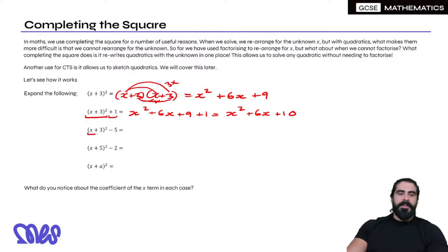Next one, same thing. We know what that expands to: x² + 6x + 9, then subtract 5.